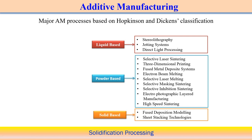The major additive manufacturing processes can be classified into three categories: liquid-based, powder-based, and solid-based. Liquid-based means raw material in liquid form; powder-based means raw material in powder form; solid-based means raw material in solid form. Liquid-based processes include stereolithography, jetting systems, and direct light processing. In these processes, a focused laser scans the liquid, which then changes from liquid phase to solid phase through solidification or curing.